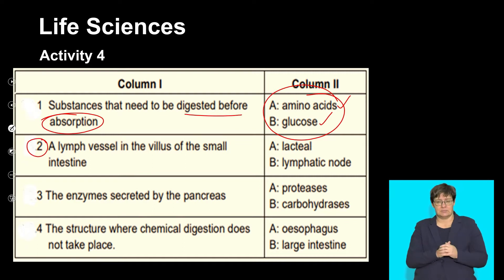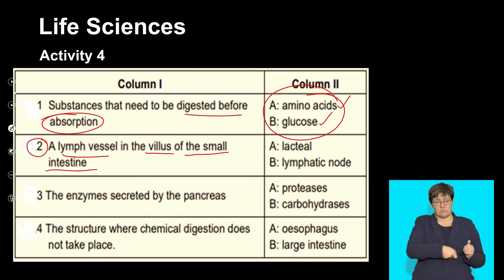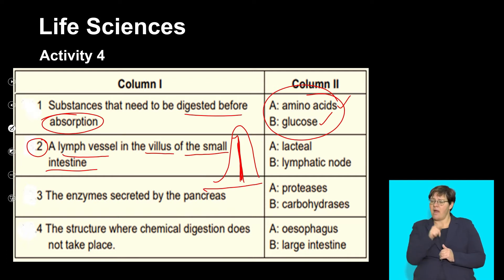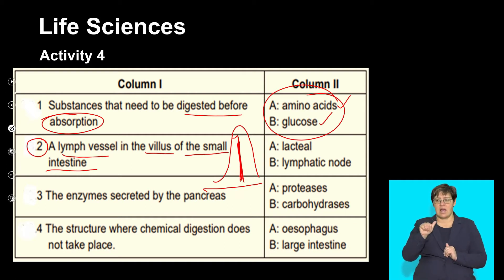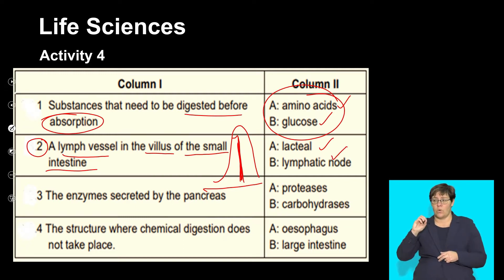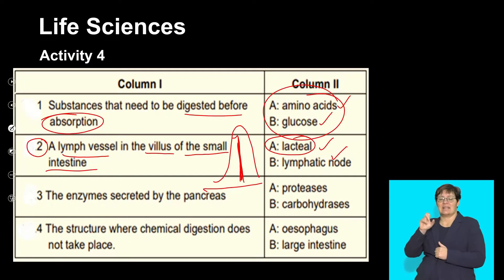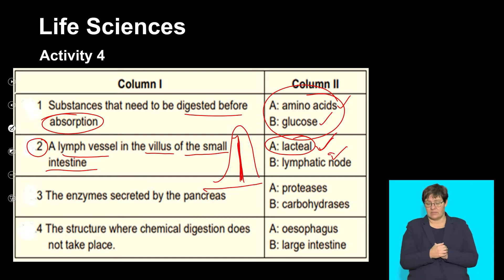3.2: A lymph vessel in the villus of the small intestine. In the villus you have the central lacteal in the middle, which is part of the lymph vessel — important in the absorption of digested fat. The options are the lacteal and the lymphatic node. Both link to the lymph system; however, it is only the lacteal that is responsible for absorption. So the answer here will be A only. The lymphatic nodes are present around the body but not in the villus.